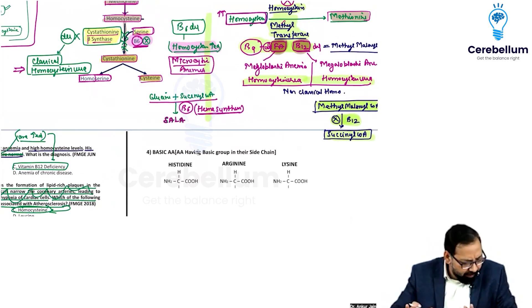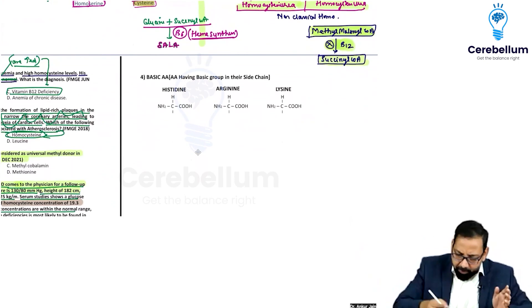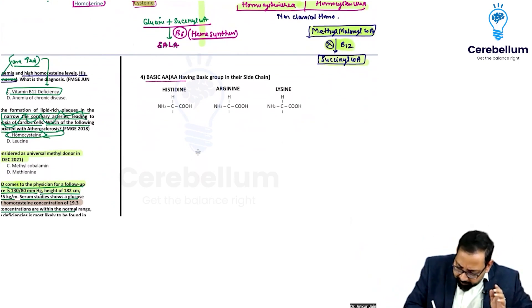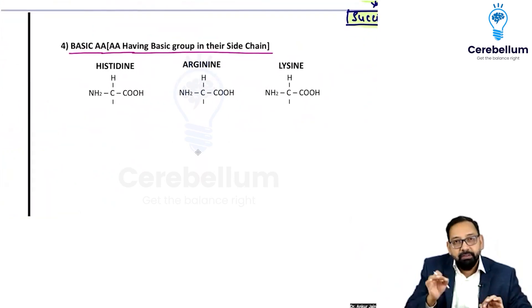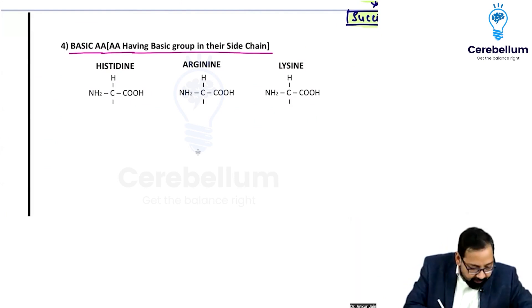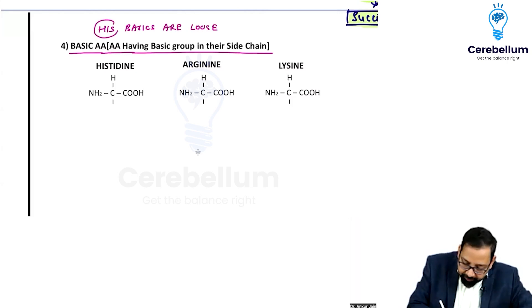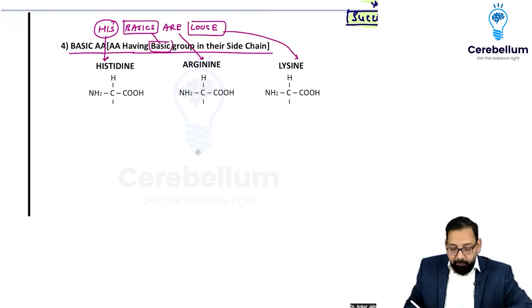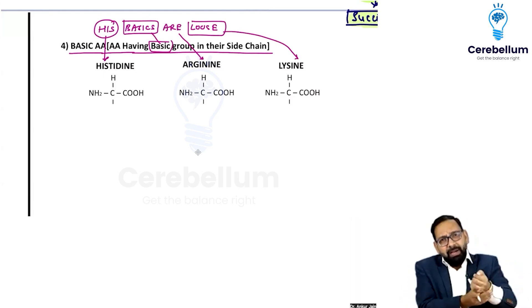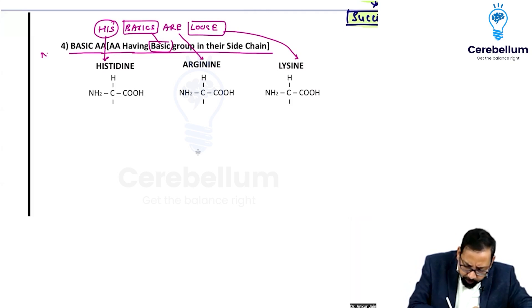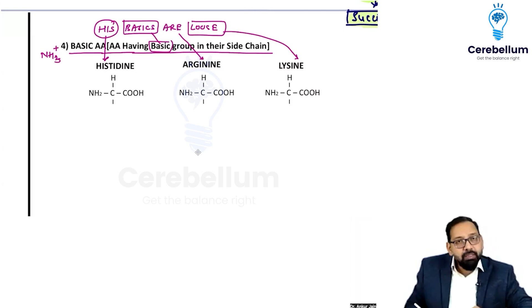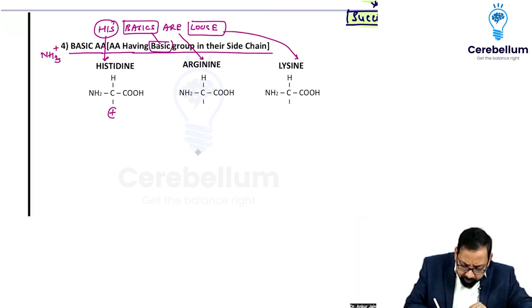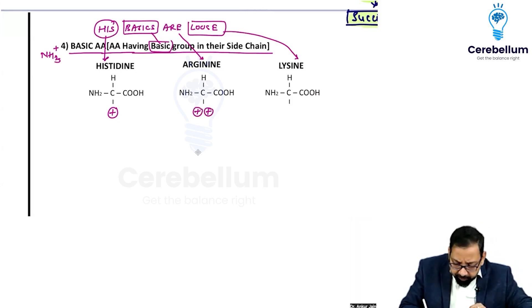Now we start our next amino acid. Basic amino acids have a basic group in their side chain. There are three amino acids with basic groups in their side chain, and the mnemonic is 'HIS BASICS ARE LOOSE' — HIS for histidine, ARE for arginine, LOOSE for lysine. Wherever you find a basic amino acid, there is an amino group present, and whenever an amino group is there, it will acquire a positive charge.